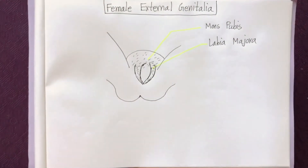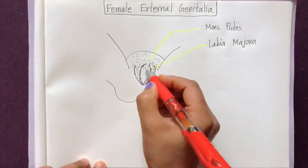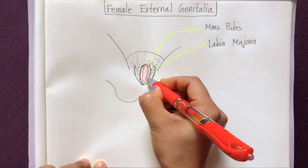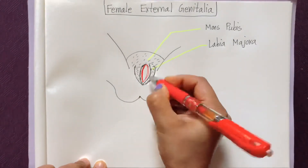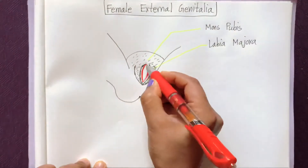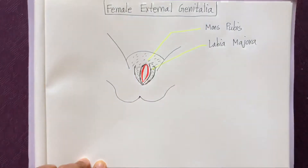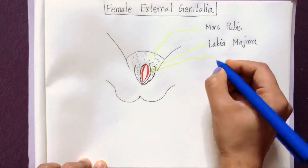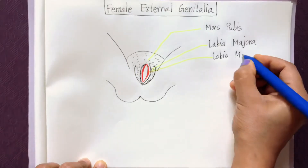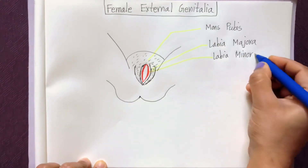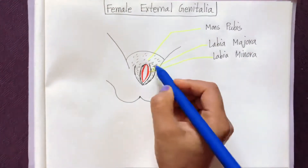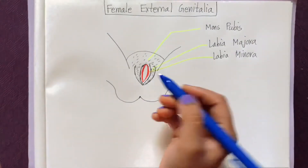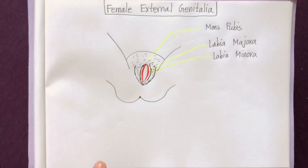Just below the labia majora, another two lip-like structures are present — these are labia minora. Labia minora are paired folds of tissue just under the labia majora, and they are smaller than labia majora. Unlike labia majora, labia minora don't contain any fat or pubic hair; they are just folds of tissue.